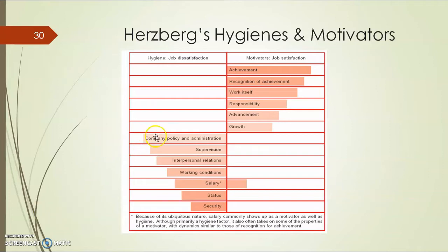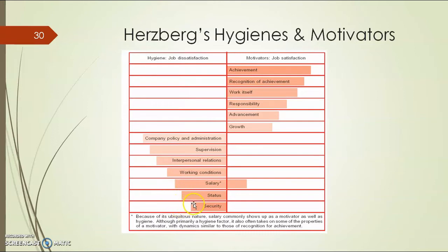What were the hygiene factors? Company policy, administration, supervision — what kind of manager is there in the company, what kind of supervision exists — interpersonal relations with co-workers, peers, subordinates, and how worker-supervisor relations are. Working conditions — how is the temperature, lighting, washrooms — then status and job security. These were the hygiene factors.